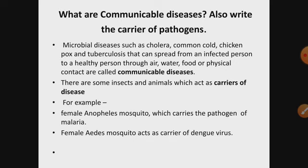For example, the female Anopheles mosquito is the carrier or vector of malaria, and the causal organism or pathogen is the protozoan Plasmodium. Plasmodium is a type of protozoa — one of the types of microorganism you have already learnt about. So protozoa is the pathogen of the disease, whereas it is carried from infected person to healthy person through the vector, the female Anopheles mosquito. One more example: the female Aedes mosquito acts as a carrier of the dengue virus.